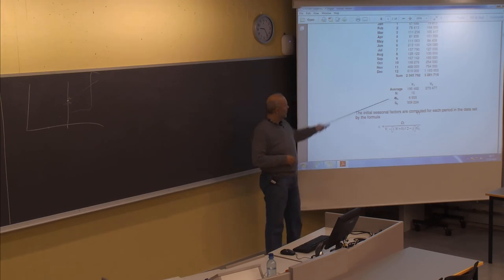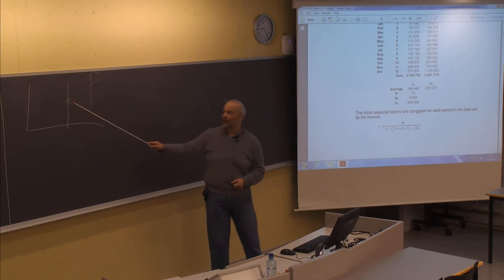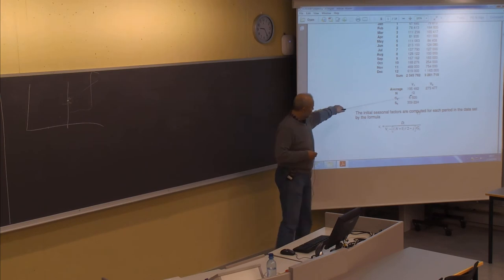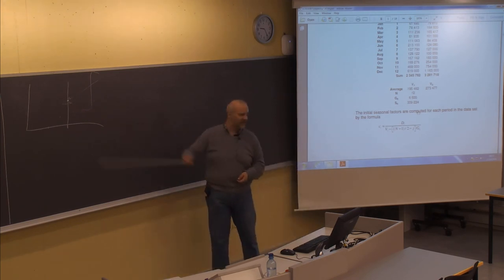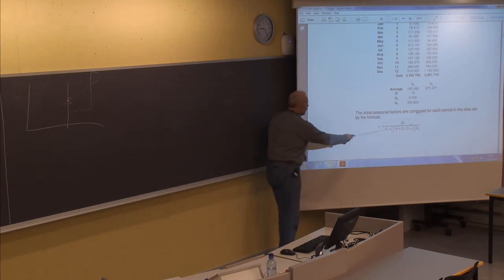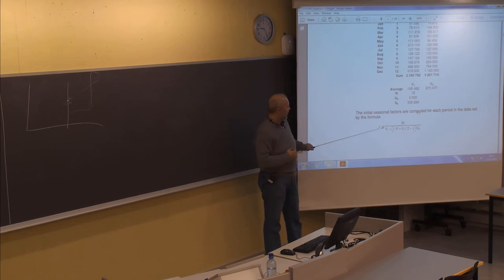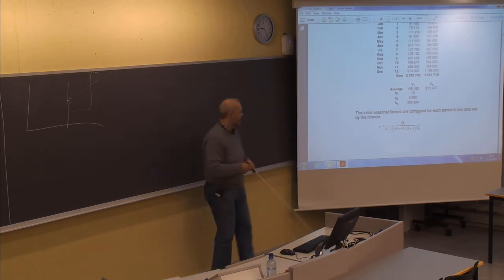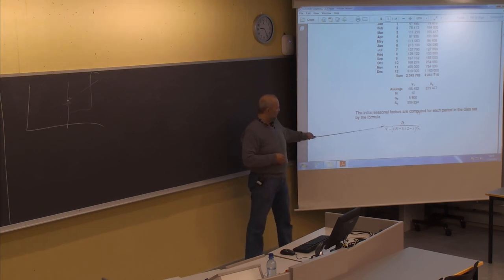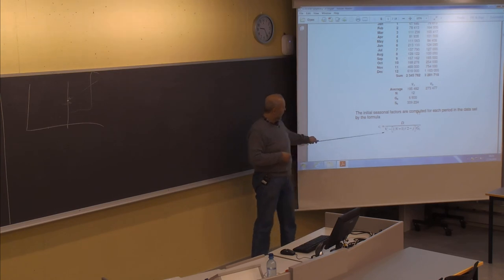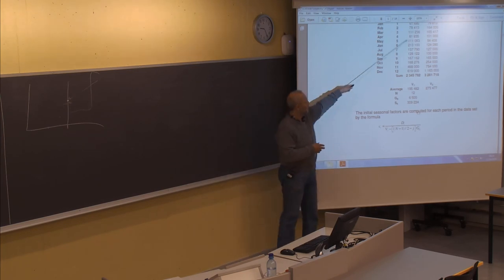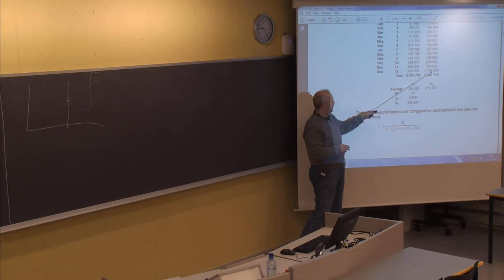We find that G0 is 6,500, so we expect an increase of 6,500 per month. And S0, the value of the series, is found to be 309,000. Then using this formula, we remember that we need to find the seasonal factor for all 24 data points used for initializing the series. We find the seasonal factor by dividing the exact demand by an expression where VI is the average for that particular year — the average of 2002 for those 12 points, and the average of 2003 for the next 12 points.